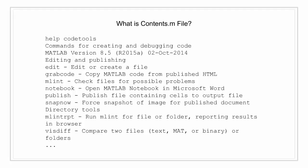Using the help command I am viewing the functions available in the folder code_tools. It lists the version and the two categories — editing and publishing, and directory tools — along with all functions and a one-line description. If you do not want others to see a summary of your programs, you can place an empty contents.m file in the folder. An empty contents file causes 'help folder_name' to report 'no help found for folder_name'. Without a contents.m file, the help and doc commands display a generated list of all program files in the folder.